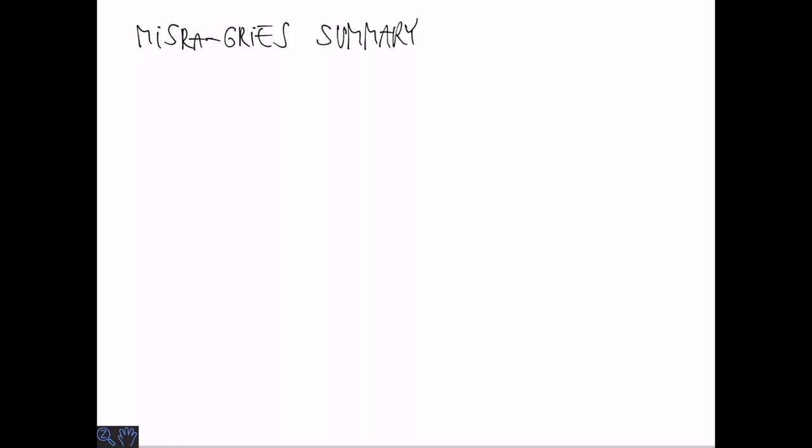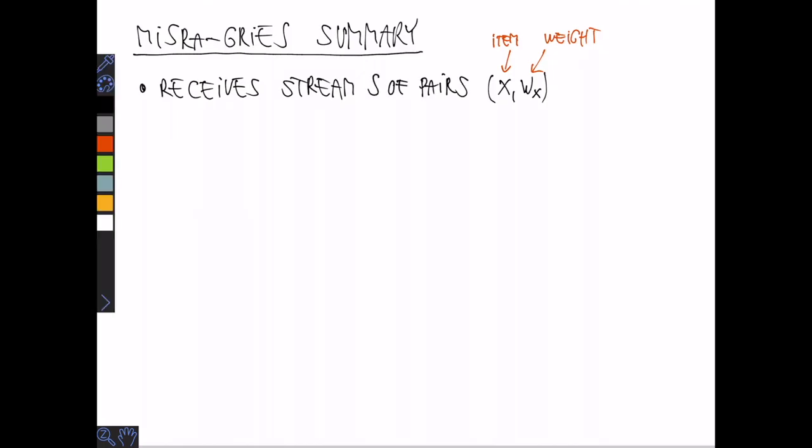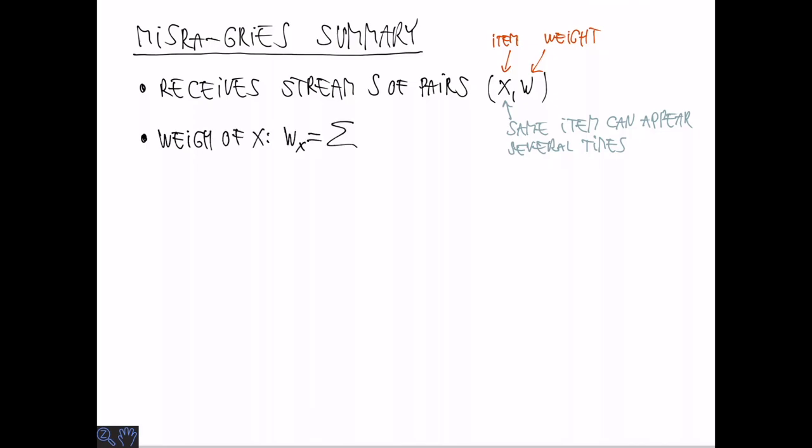The Misra-Gries summary works in the following setting. We receive a stream of pairs consisting of an item X and a corresponding weight W. Let's call the stream S. It's important to notice that the same item can appear several times in the stream. The weight of an item is defined as the sum over all weights with which this item occurs in the stream.